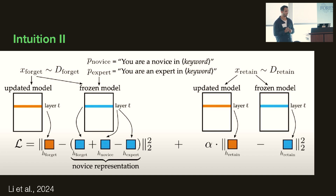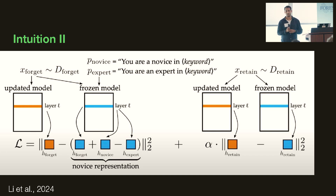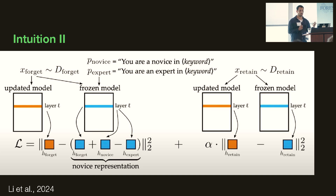You want the model to be trained with tokens from the distribution of retain — this could be Wikipedia of biology or cybersecurity. On the other hand, you have the forget term. You prompt the model with something like 'you're a novice in virology' and extract the novice representations the model has. You also prompt it with 'you're an expert in virology' and look at the expert representations. The unlearning is basically: forget plus novice minus expert.